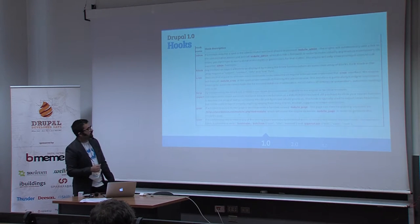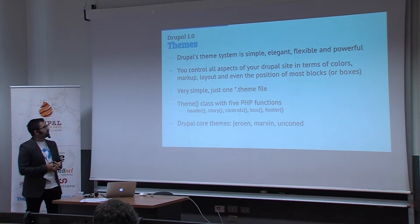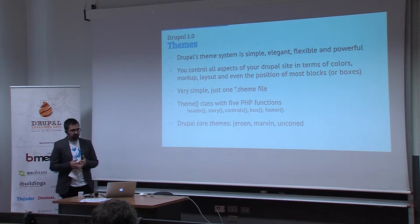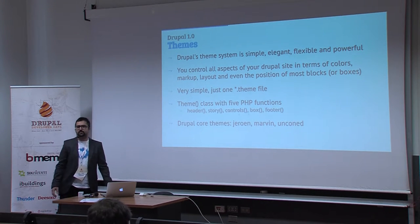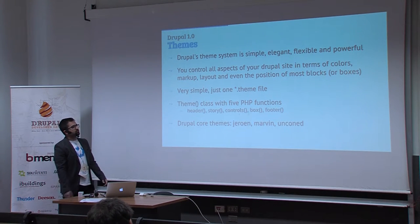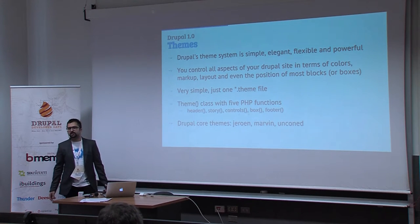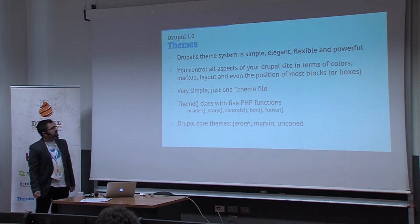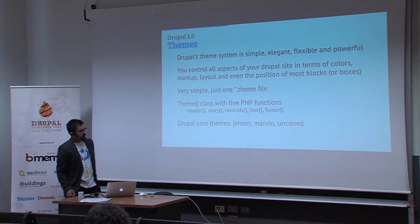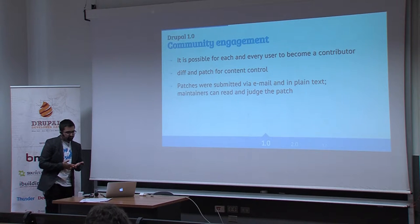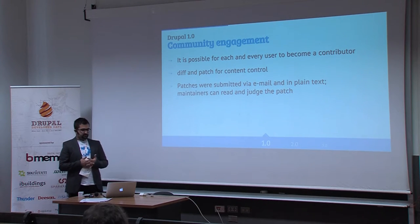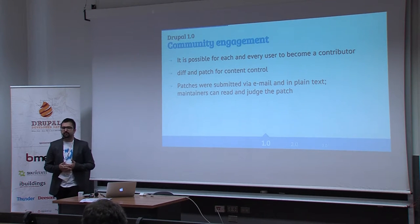The idea was to be able to run random code at given places in the engine, and those places were called hooks. There were only seven hooks in Drupal 1, and interestingly three of them are still in use today: hook_cron, hook_help, and hook_block. From the first version Drupal also tried to separate the backend from the frontend with a theming system — simple but flexible — so you could customize things like colors, layouts, and the position of most boxes, today called blocks. Theme files were just a single PHP file called .theme, located in the themes folder.